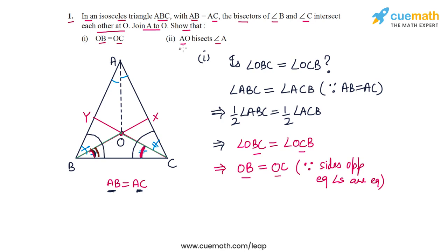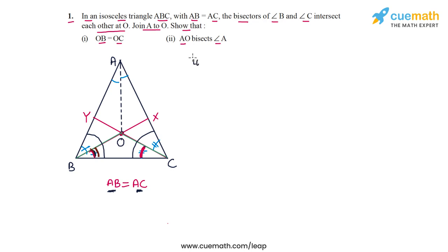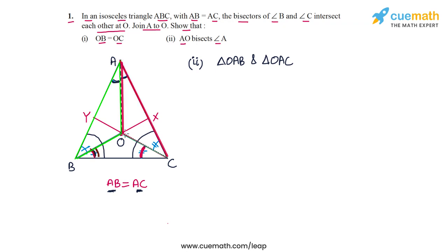This proves part one: OB is equal to OC. Now using this, let's prove that AO bisects angle A. To prove that AO bisects angle A, we have to prove that angle OAB equals angle OAC. Consider triangles OAB and OAC — these two triangles are visually congruent. Let's prove this rigorously.